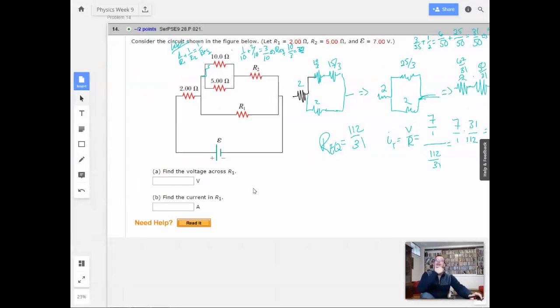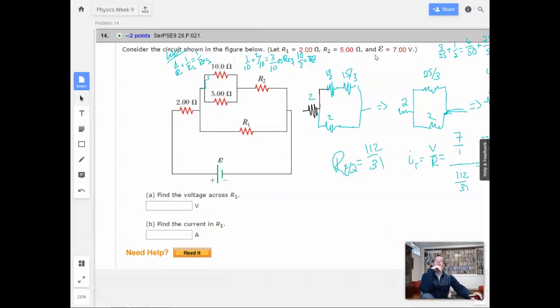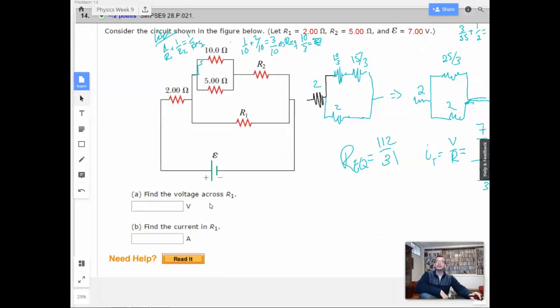All right. Now let's look at this real quick. So, let's see here. The big resistor we have is 2. Okay. Maybe that's true. All right. So now we need to find the voltage across R1.